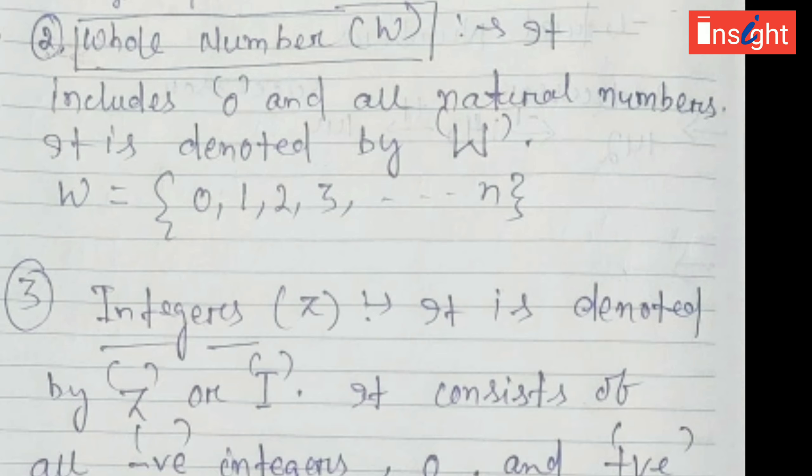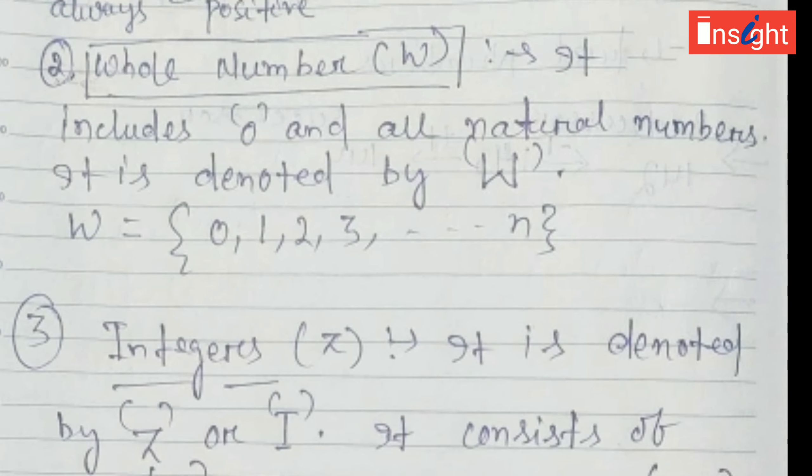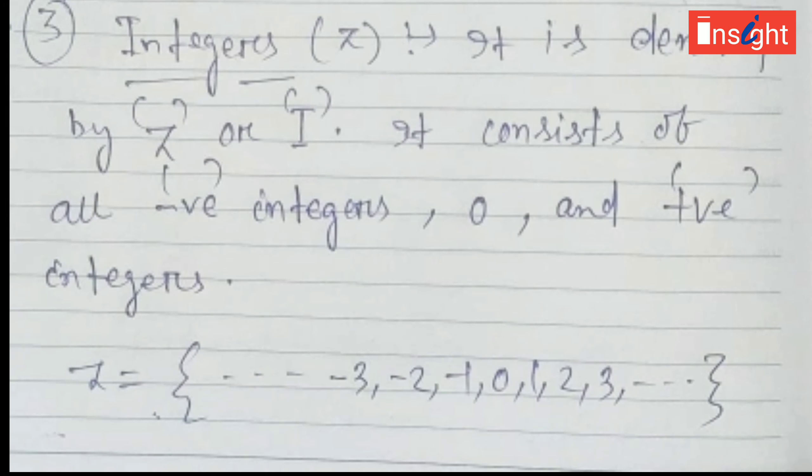The next type of number system is whole number, denoted by capital W. It includes zero and all the natural numbers. So inside W, 0, 1, 2, 3, and unlimited numbers are there.